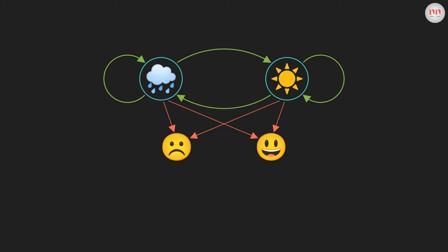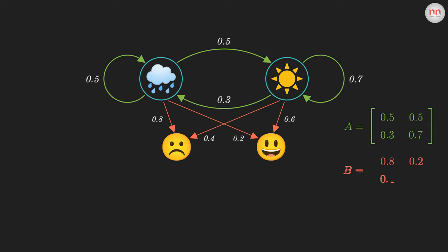Let me write the transition and emission probabilities. The diagram looks a bit messy, so I'm just going to write the transition and emission matrices separately. Let me also write the stationary distribution for the hidden states. If you have watched my previous videos, then you know how to compute PI from the matrix A. Feel free to pause and verify this result.